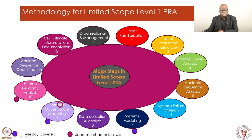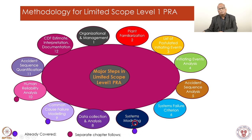Common cause failure we have already covered. Data collection and analysis we will be discussing quite a bit. System modeling - fault tree and event tree - we have also discussed. Fault tree is used for systems typically, and event trees are used for generating the accident sequences. Human reliability analysis will not be covered in this lecture, as there is a separate week devoted to it.